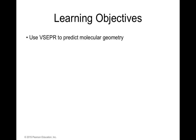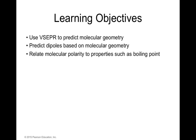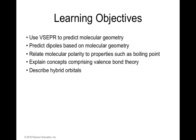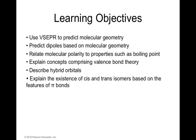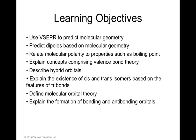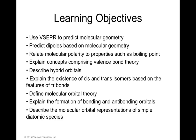The learning objectives for this chapter are: the use of the valence shell electron pair repulsion model to predict molecular geometry; predict dipoles based on molecular geometry; relate molecular polarity to properties such as boiling point; explain concepts comprising valence bond theory; describe hybrid orbitals and explain the existence of cis and trans isomers based on the features of pi bonds; define molecular orbital theory and explain the formation of bonding and anti-bonding orbitals; and describe the molecular orbital representation of simple diatomic species.